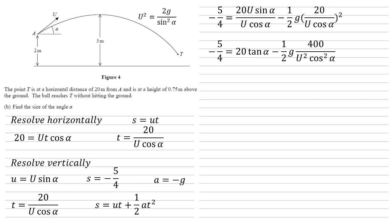But we know that U squared is equal to 2G over sine squared alpha. We calculated that earlier. So substituting that in means the final fraction is a half G times 400 sine squared alpha over 2G cos squared alpha.